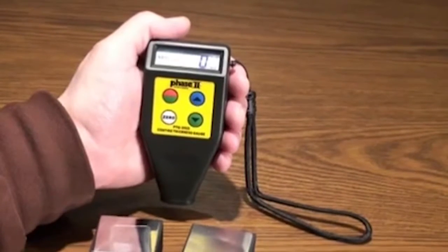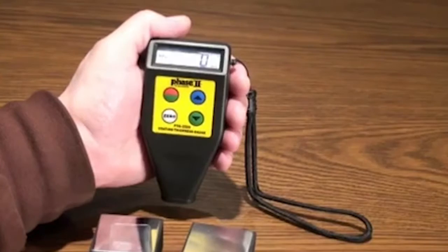This concludes our function and application guide for the Phase 2 PTG 3500 series coating thickness gauges.